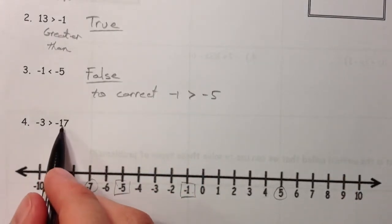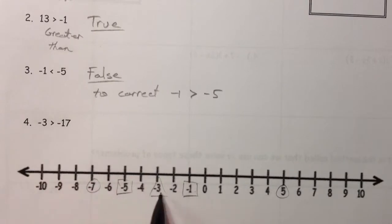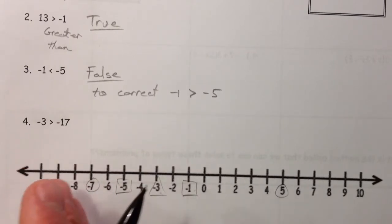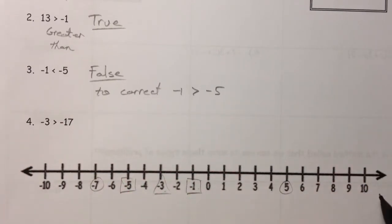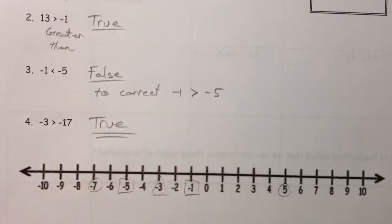3 is greater than negative 17. So, using our number line, negative 17 is way over that way, way to the left. And negative 3 is right here. And so, is negative 3 bigger than the number? Remember, all the numbers to the right, 10, 9, 8, are bigger than 7, 6, 5. And so, this is greater than. That is also true.